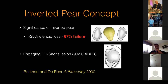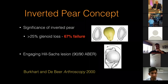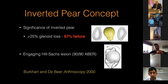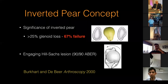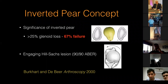The other finding was the term 'engaging Hill-Sachs.' When they put the arm in 90 degrees of abduction and 90 degrees of external rotation, if the Hill-Sachs is in line with the anterior glenoid, they have a higher recurrence rate. They also noticed that probably about 90 percent of the contact athletes failed if they had glenoid bone loss.